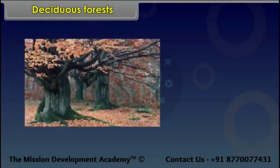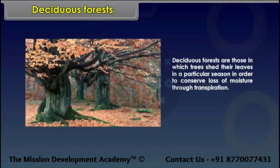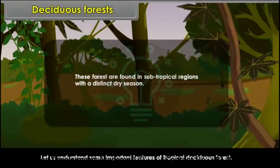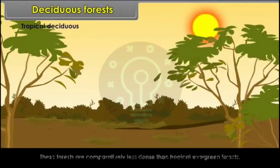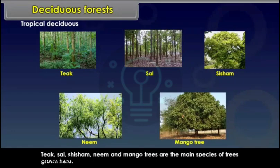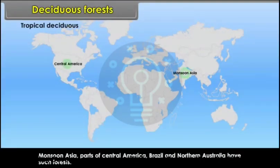Deciduous forests are those in which trees shed their leaves in a particular season to conserve moisture through transpiration. Tropical deciduous forests are found in subtropical regions with a distinct dry season. Trees shed their leaves during summer, and these forests are comparatively less dense than tropical evergreen forests. Teak, sal, shisham, neem and mango are the main species. Such forests are found in Monsoon Asia, parts of Central America, Brazil and Northern Australia.